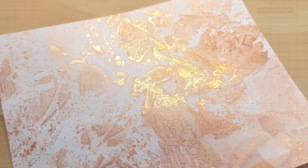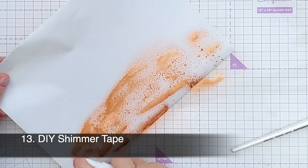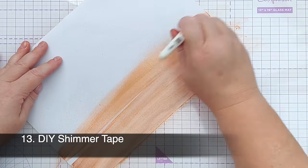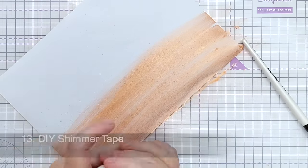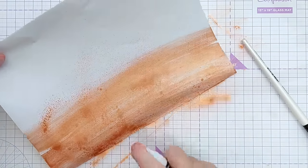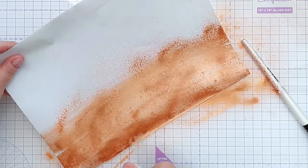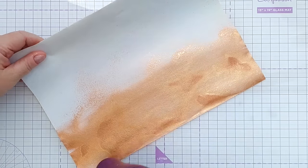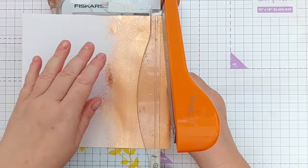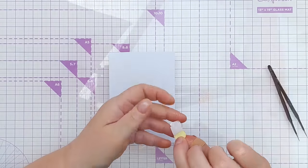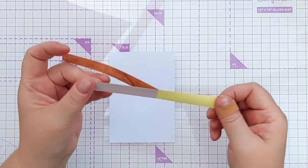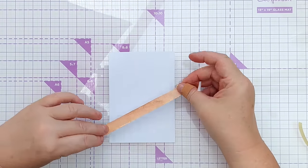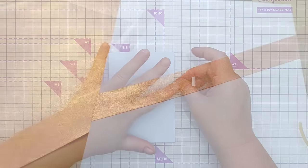Technique number thirteen is making some DIY shimmer tape or washi tape. I spritzed some A4 sticker paper with the spray, spread it out with a paintbrush and then spritzed on a bit more and dried it with my hair dryer. Once I dried it I sliced it into strips with my guillotine and took the release paper off the back, and I was able to use it like some beautiful rose gold shiny washi tape.